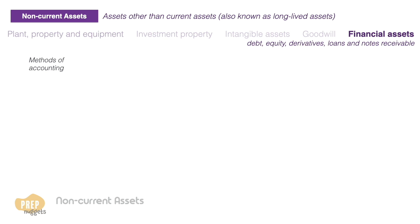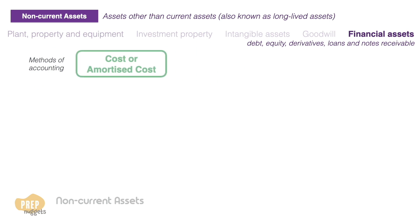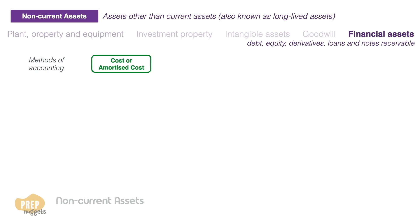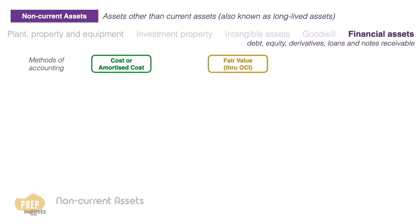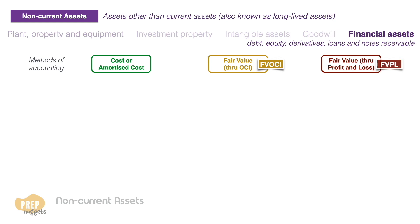In general, there are three methods to account for the values of such financial assets: measured at cost or amortized cost, measured at fair value through other comprehensive income, and measured at fair value through profit and loss. For simplicity, we shall refer to the last two as FVOCI and FVPL, respectively.